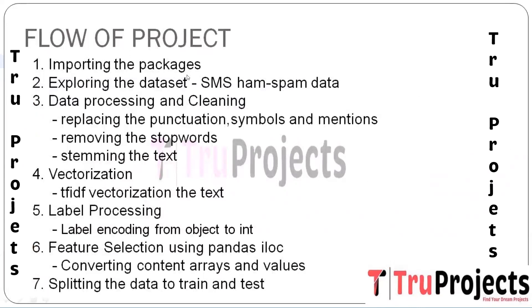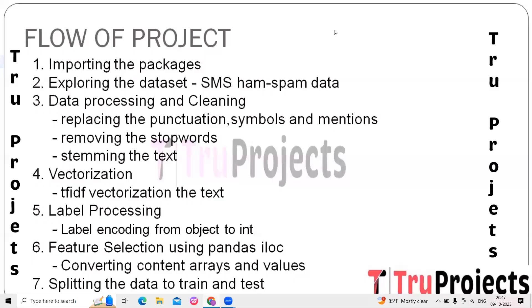The project flow begins with importing packages such as NumPy, Pandas, and other libraries. Next is exploring the dataset to gain a preliminary understanding of its structure, features, and contents. This includes loading the dataset using Pandas in Python, examining dimensions, column names, and data types. For SMS spam data, this involves inspecting examples of messages labeled as ham (non-spam) and spam.